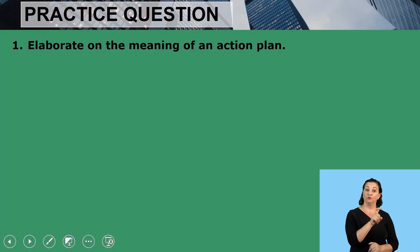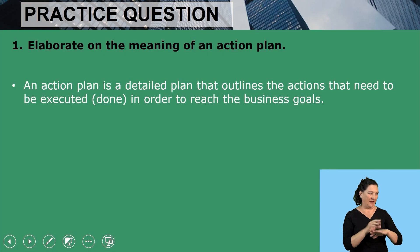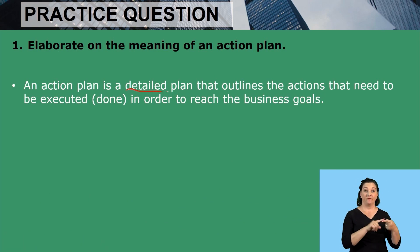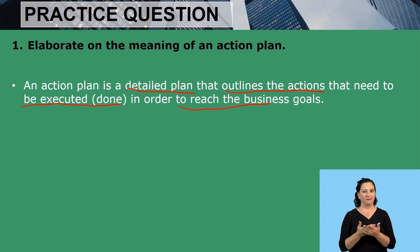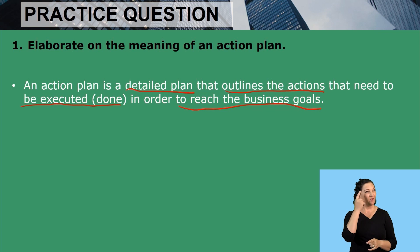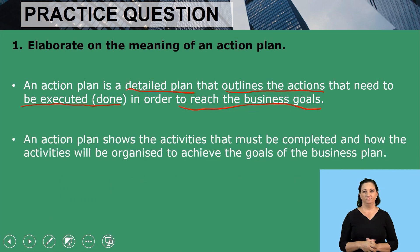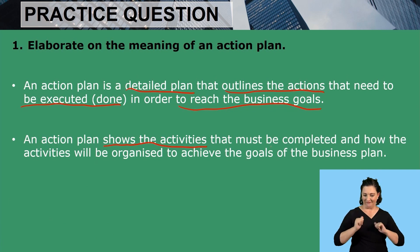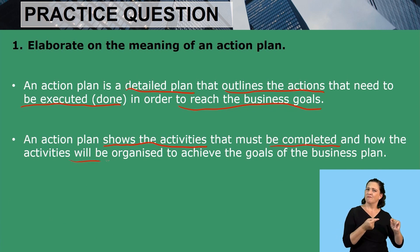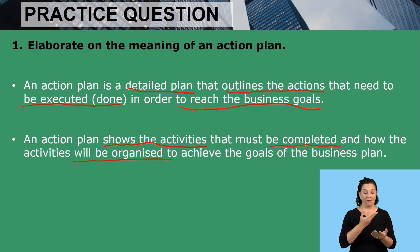The first practice question says: elaborate on the meaning of an action plan. An action plan is a detailed plan that outlines the actions that need to be executed in order to reach the business goals. An action plan shows the activities that must be completed and how the activities will be organized to achieve the goals of the business plan.